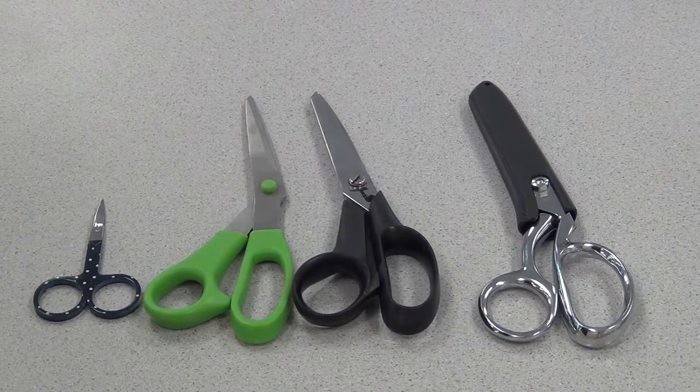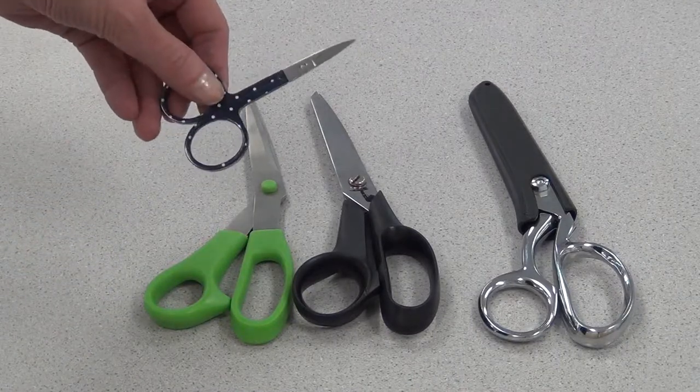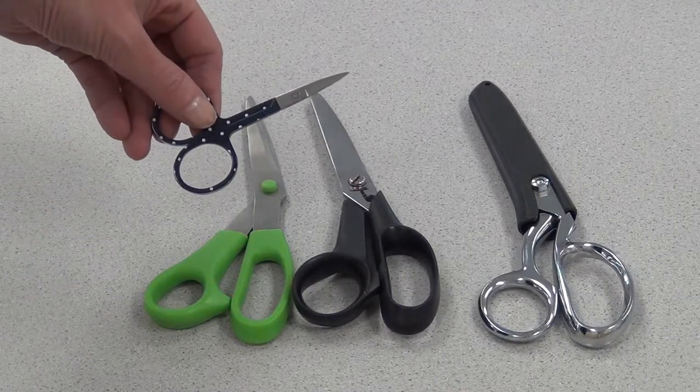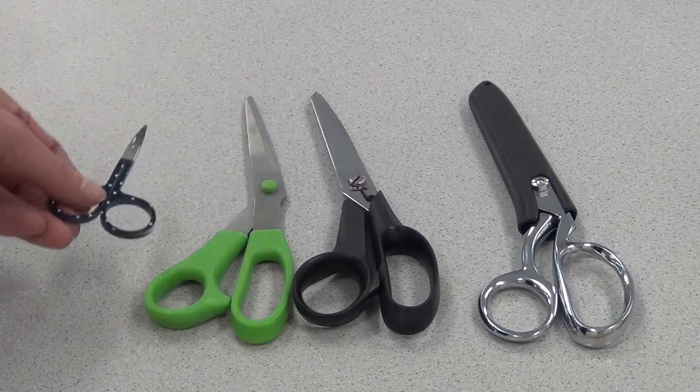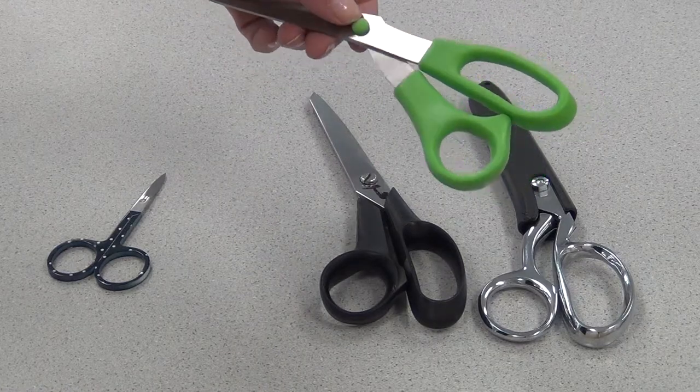We use four main types of scissors in the fashion lab. The first are embroidery scissors, used for cutting small things or for clipping curves or making clips into fabric. The second are paper scissors used for paper only.